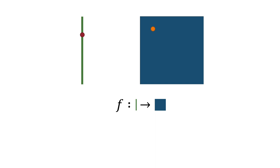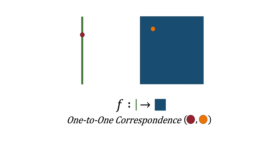To summarize, Cantor found a way to pair numbers from the unit line segment onto the square and vice versa. By the way, the letter F refers to a function, or a way to pair points or numbers together. In our case, the function F takes points from the line segment and associates them with a point on the square. Cantor's method pairs these points in a one-to-one fashion.